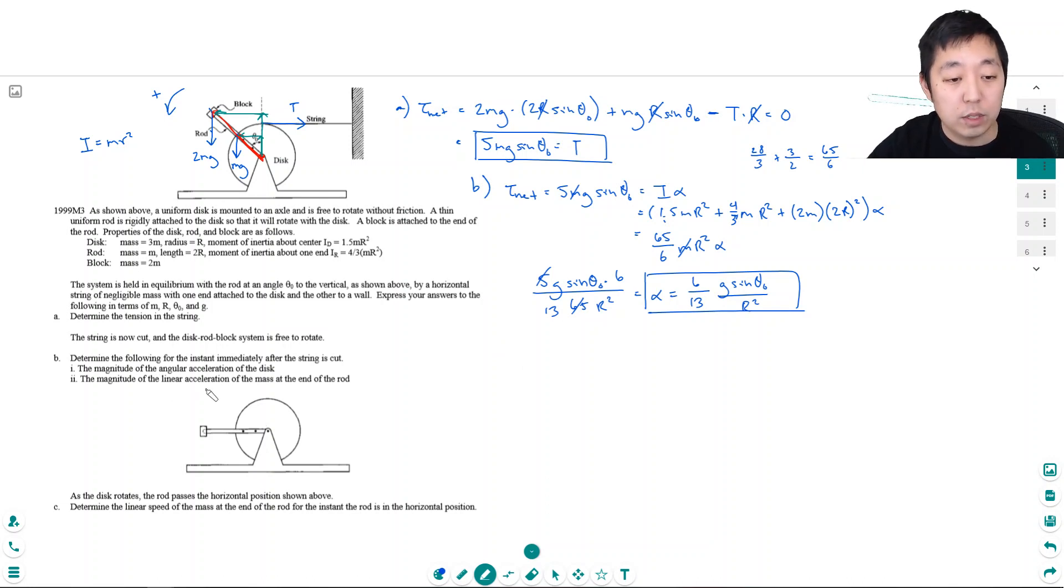The magnitude of the linear acceleration of the mass at the end of the block. The linear acceleration is a is equal to alpha r. That's equal to 6 thirteenths g sine theta theta naught. And then multiplying this by r is just gonna get rid of one of those r's. So that's acceleration, linear acceleration.